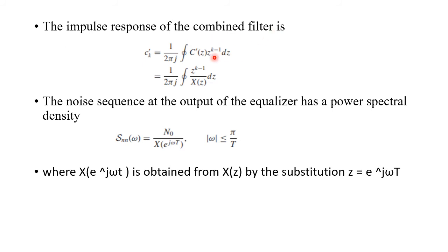The impulse response of the combined filter is ck' = (1/2πj) ∮ C'(z)·z^(k−1) dz = (1/2πj) ∮ z^(k−1)/X(z) dz, so C'(z) = 1/X(z). The noise power spectral density at the output of the equalizer is Snn(ω) = N0 / |X(e^jωT)|², obtained by substituting z = e^jωT.